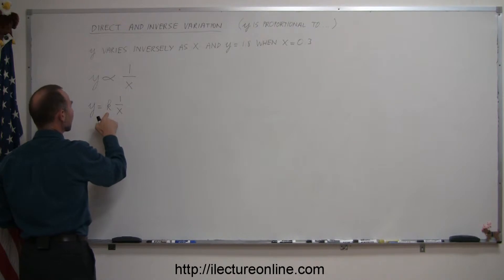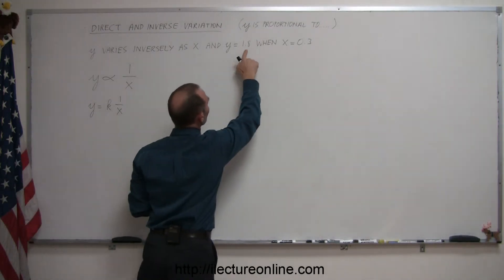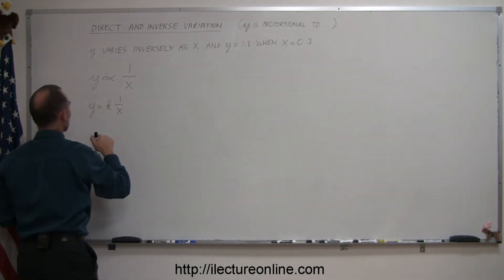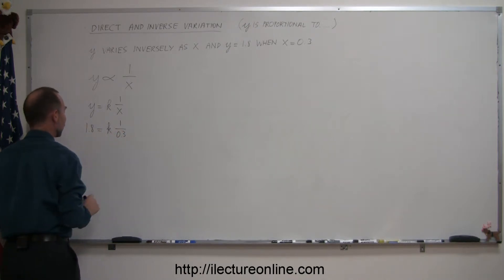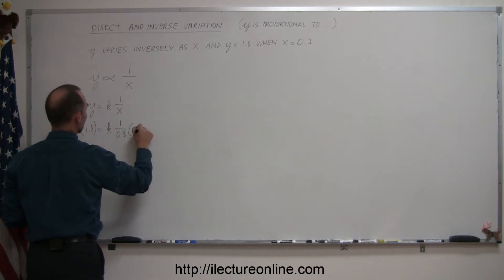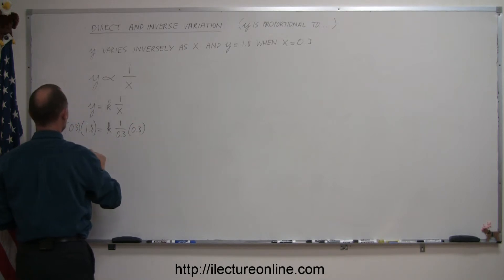And now to find the value for k we have to plug in the values for y and x that we were given. So when x is equal to 0.3, y is equal to 1.8. We now want to multiply both sides by 0.3 to isolate k. So this cancels out and we have k is equal to... that would be 0.54 equals k.